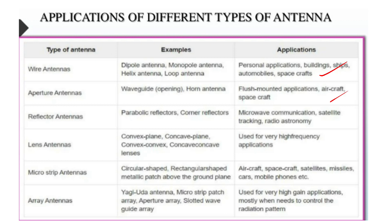Different applications include reflectors: parabolic reflectors and corner reflectors, used for satellite tracking, radio astronomy, and microwave communication. Lens antenna types include convex plane, concave plane, convex, and concave lenses, used in high frequency applications.